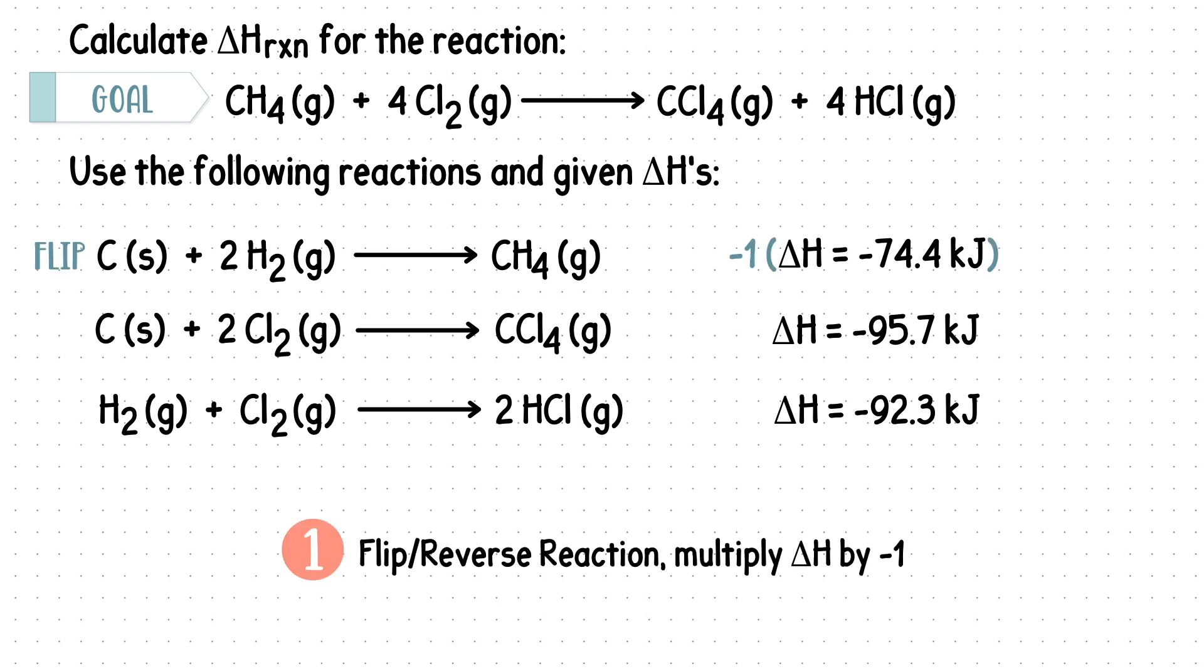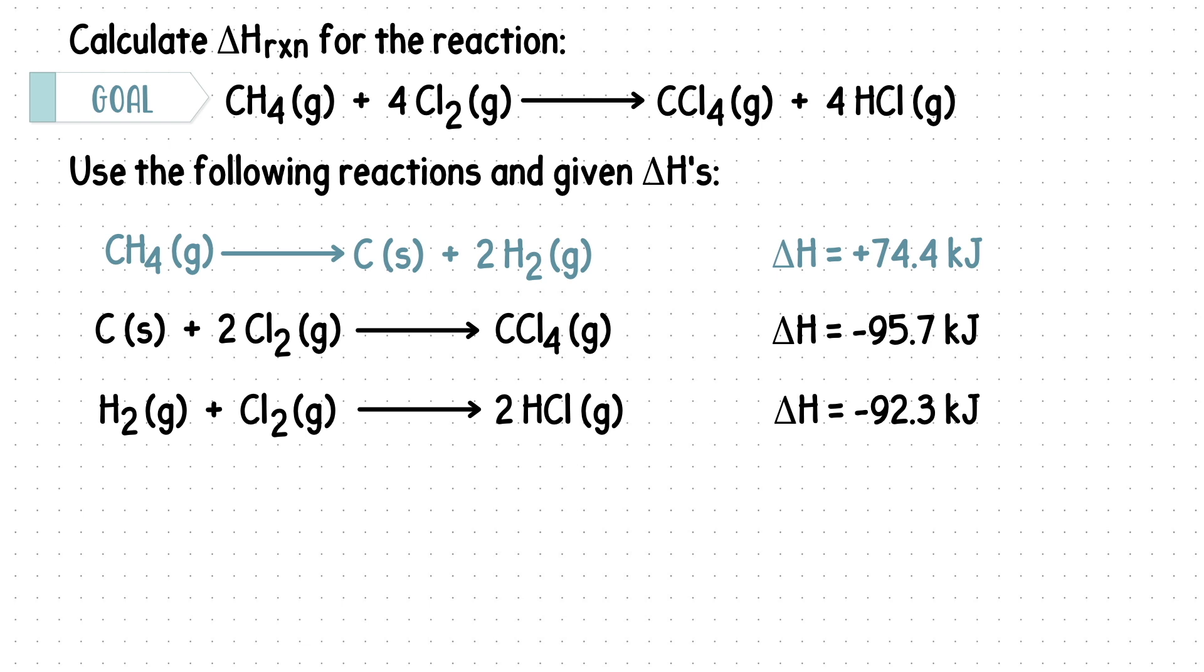So we can use rule one and flip the entire reaction. Don't forget to multiply the change in enthalpy by a negative one. Now that we have the CH4 on the correct side, we can move on to the second reactant.